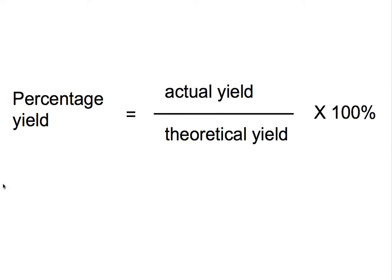This is the equation for percentage yield which you will find in the front of your data book. Percentage yield equals the actual yield divided by the theoretical yield, multiplied by 100. This gives you an idea of how effective your reaction is at producing the product that you want. It doesn't tell you how many byproducts you have or how green your reaction is in terms of atom economy, which is a separate calculation.